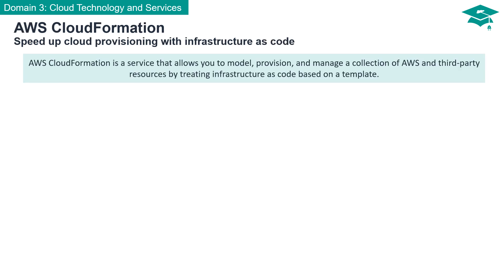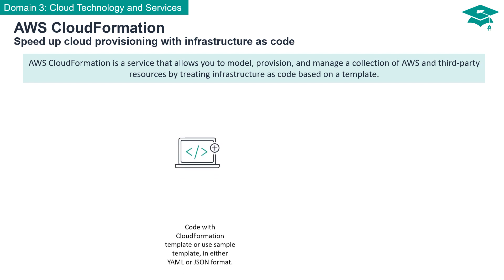AWS CloudFormation is a powerful service that accelerates cloud provisioning by enabling you to treat your infrastructure as code. With CloudFormation, you can model, provision, and manage a collection of AWS and third-party resources seamlessly. Start by crafting your infrastructure using a CloudFormation template — either create your own or leverage a sample template provided by AWS. These templates are written in YAML or JSON format, offering flexibility and readability for your infrastructure definition.